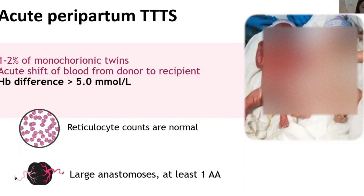The reticulocyte count ratio should be around 1 and not larger than 1.7. On the placenta, you need to look at the general color using dye injection, and you can see large anastomoses — and at least one large arterio-arterial anastomosis — which allow for a large transfusion.